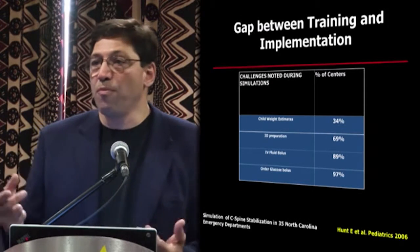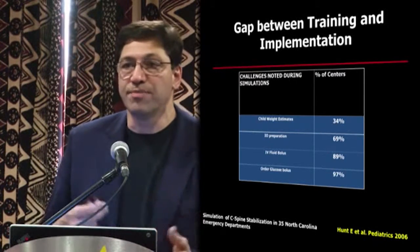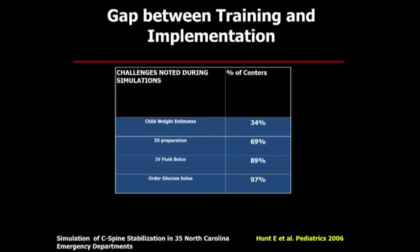We have a problem with compliance. Betsy Hunt's study in 35 emergency departments in North Carolina took a simulated child — a computerized simulator — admitted it to those emergency departments, and measured the numbers of errors made in the care of that child with septic shock. Child weight estimates, preparation of intraosseous access, IV fluid bolus, and glucose bolus calculations were very frequently wrong and frequently not within guidelines. Our ability to affect change in emergency department settings has a lot of room for improvement, but it can be done.